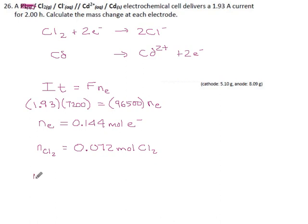From that we can get the mass. The mass of chlorine is its number of moles times its molar mass: 0.072 moles times 70.90. Punch in the calculator, and we get a mass of 5.10 grams of chlorine.